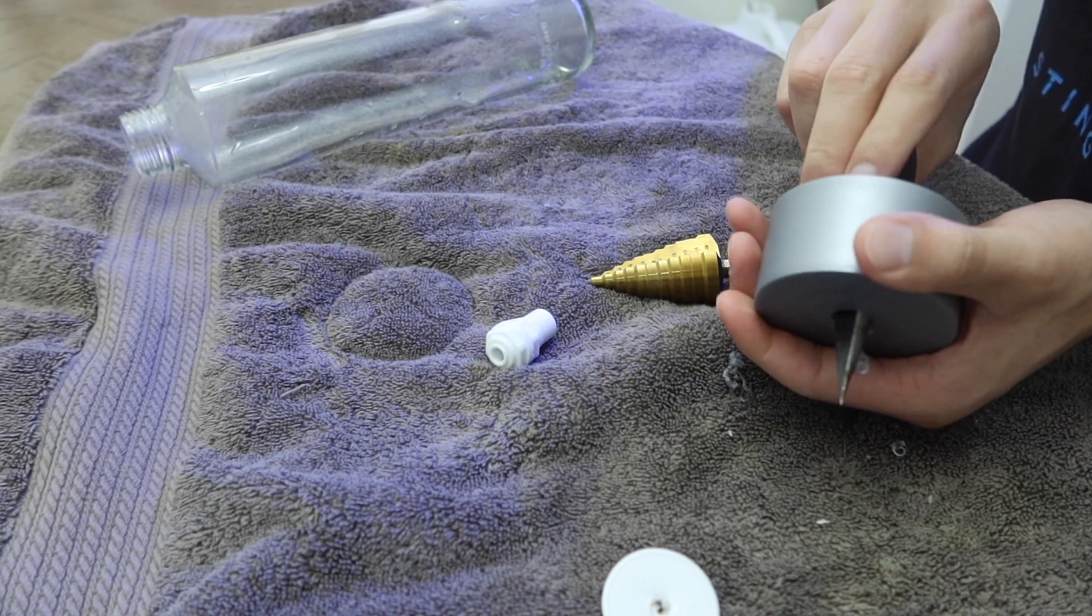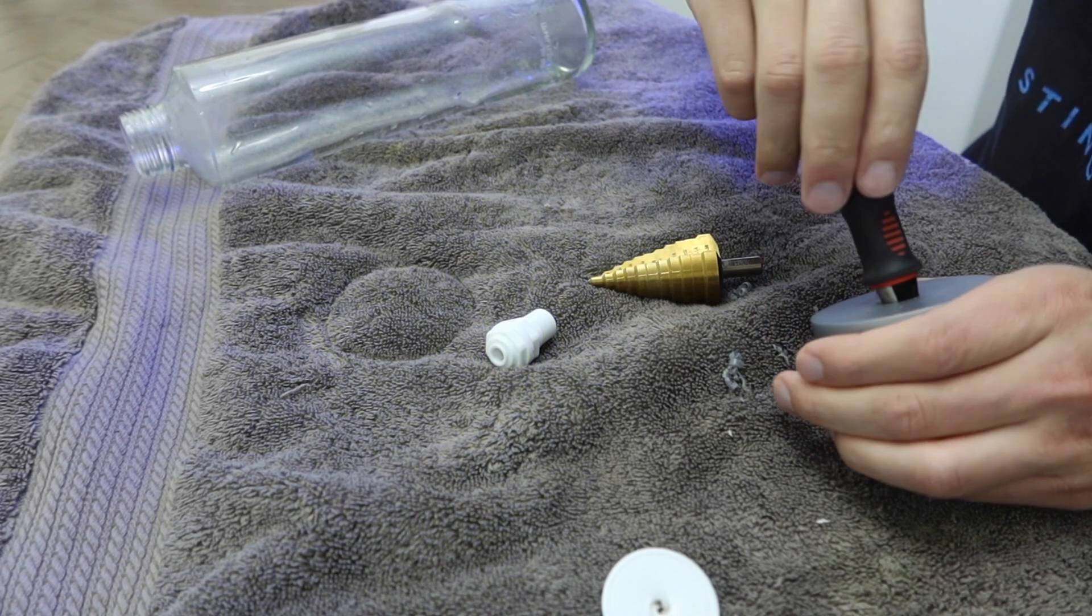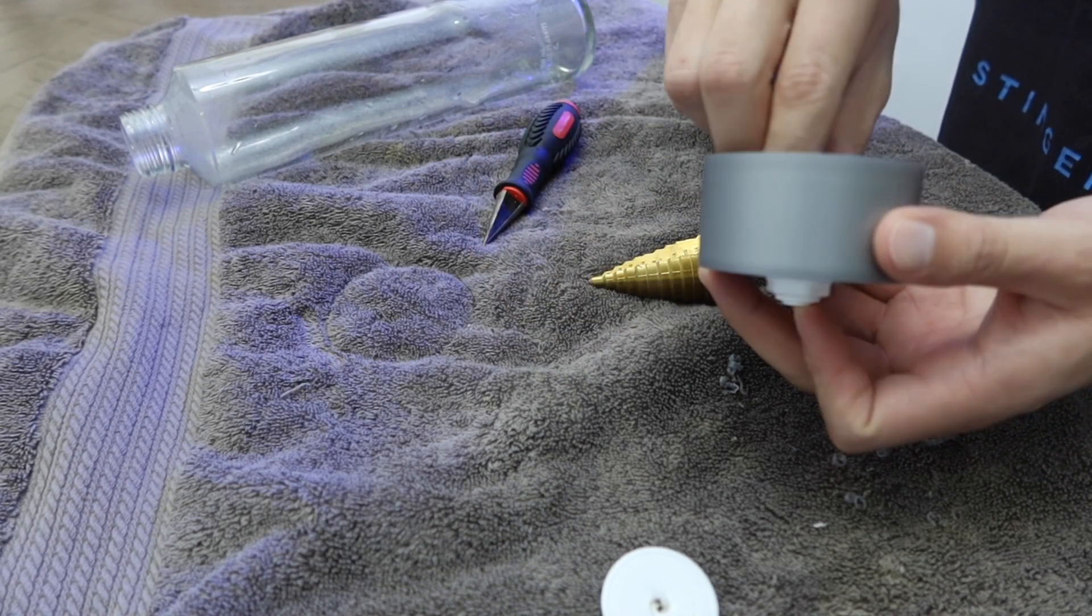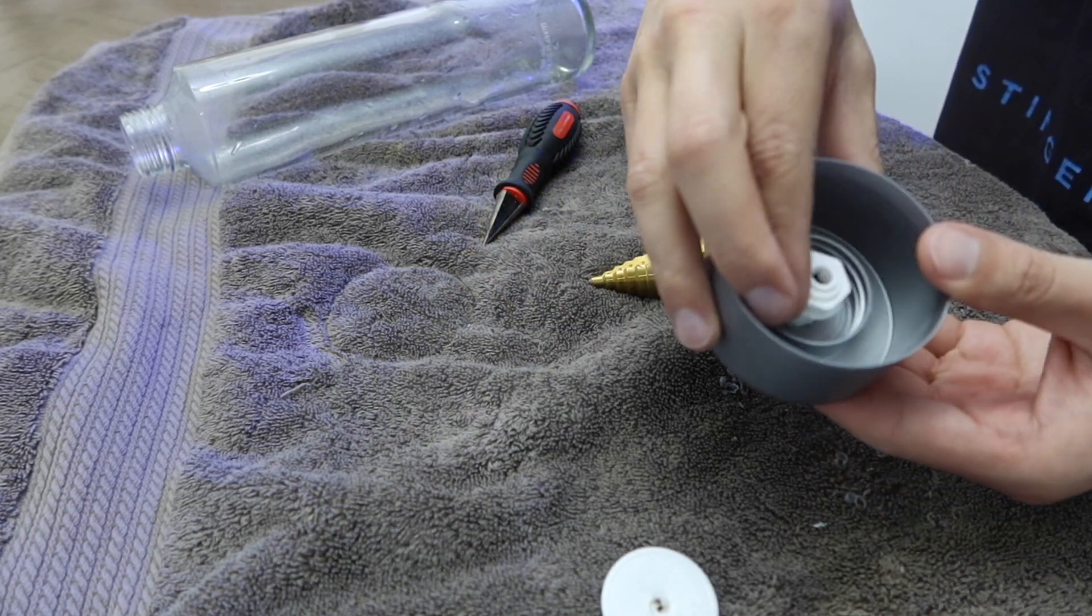And here, you want to open it, obviously, to accept the bulkhead for the RO. You don't want it too big. Obviously, too small won't fit. But too big as well, you don't want it because you want as good of a seal as you can get.